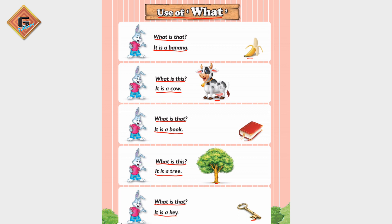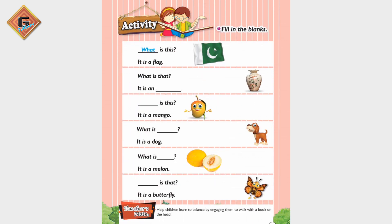So you saw that in all these sentences, in every 'what' sentence, something was being asked about some thing, and we gave the answer. Now let's move to the next page through an activity to understand this concept a little more. This is page number 69 and this is our activity page — fill in the blanks. We have some sentences and some blanks; the sentences are not complete, so we have to complete them. First, we see the blank: 'dash is this' — so the question to be asked is 'What is this?'